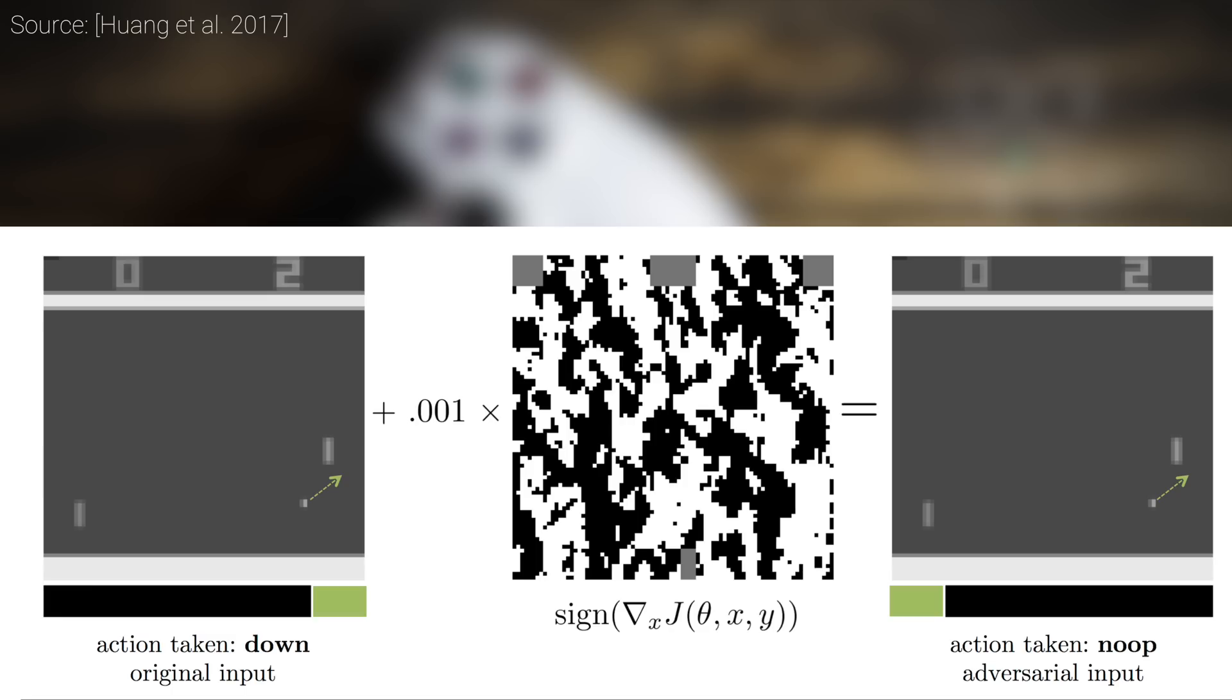it can turn a powerful learning algorithm into a blabbering idiot. The first method adds a tiny bit of noise to a large portion of the video input, where the difference is barely perceptible, but it forces the learning algorithm to choose a different action than it would have chosen otherwise.